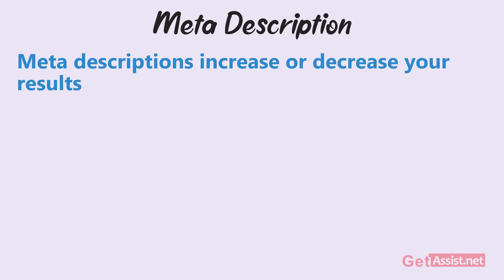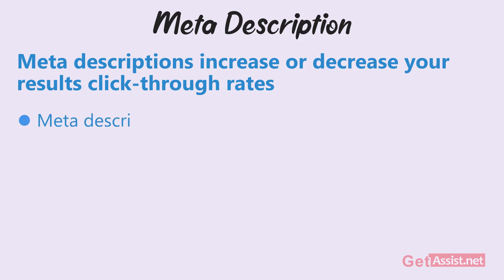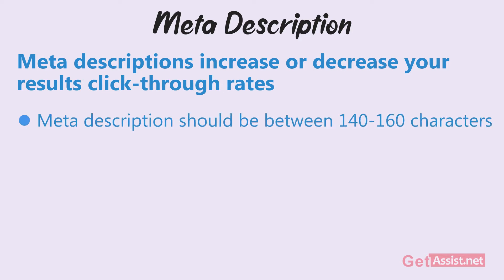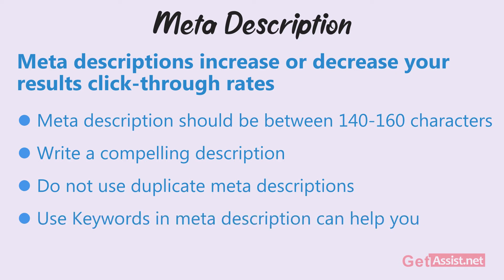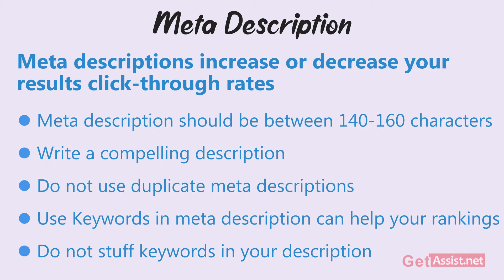Meta descriptions have the power to increase or decrease your results' click-through rates. The meta description should be kept somewhere between 140 to 160 characters. Try to write a compelling description that makes people want to visit your web page. Avoid using duplicate meta descriptions. Using a keyword in the body of the meta description is a relevancy signal for search engines that can help your rankings, but that doesn't mean you can go on stuffing keywords in your descriptions.